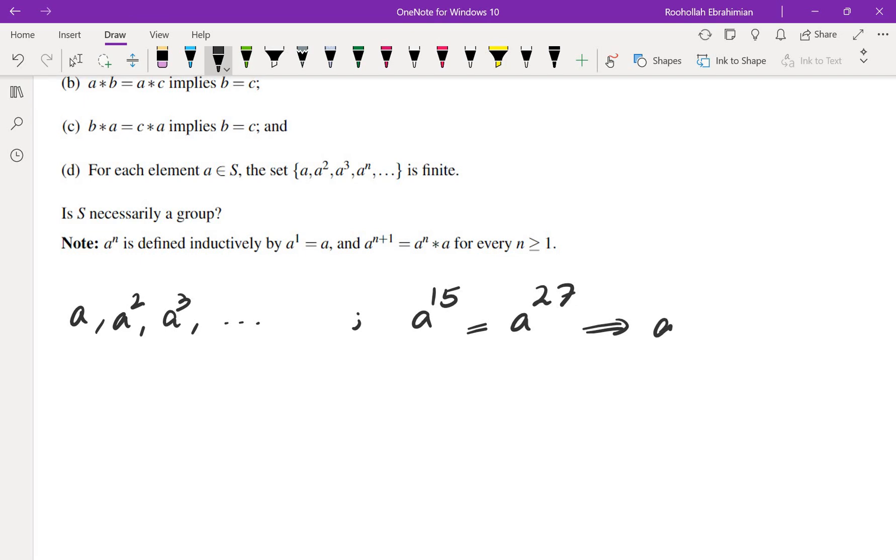Because of the cancellation, you can write down this as a to the 14th times a, or I guess star a, equals a to the 26th star a. And then because of the cancellation from the right, we're going to get a to the 14th is equal to a to the 26th. And of course you can repeat that and eventually you're going to get a equals a to the power of 13. So notice that the difference between these two exponents, 15 and 27, remains the same as the difference between 14 and 26. So 15 plus 12 gives you 27, 14 plus 12 also gives you 26.